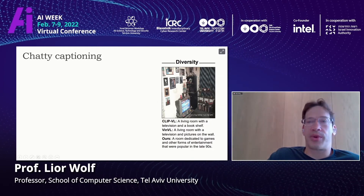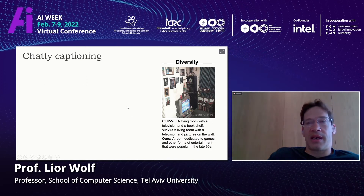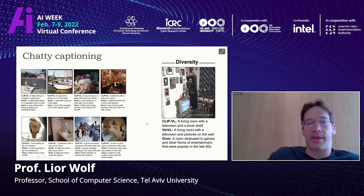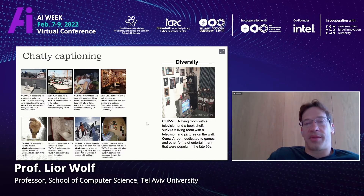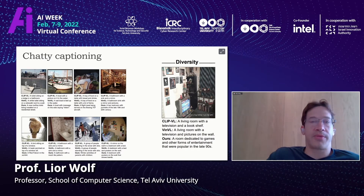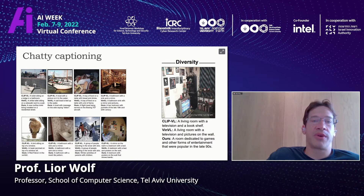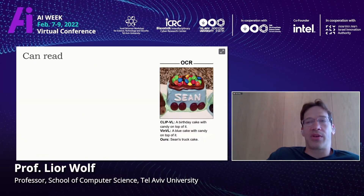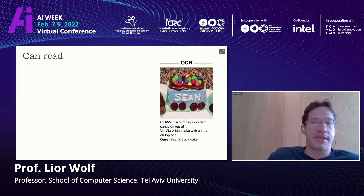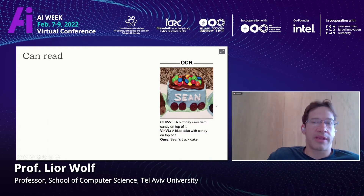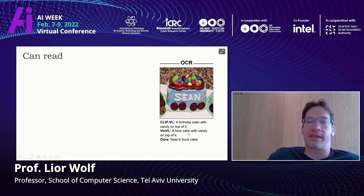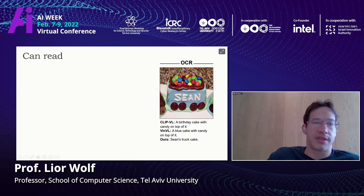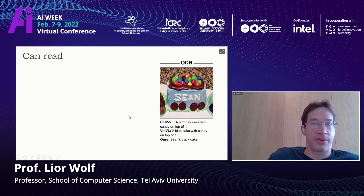The method gives full descriptions the way humans would, without skipping details. Even though it was never trained on OCR, it can read text — for example, identifying 'Shin Struck Cake' on an image it had never seen before.